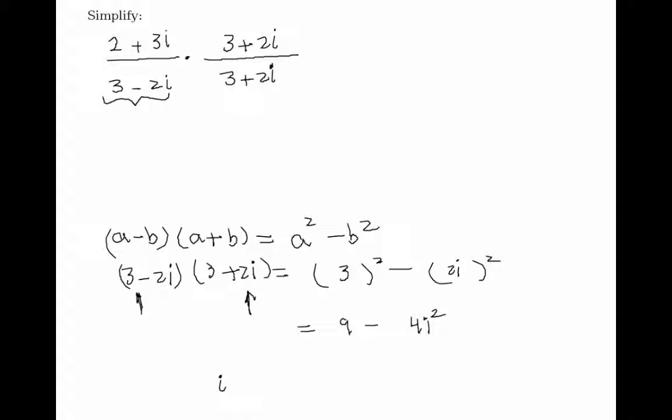Now, i squared is equal to minus 1. You had the session on this already. So in this case, I would get 9 minus 4. I'm going to replace i squared with minus 1, so it would be 9 plus 4, which is equal to 13.